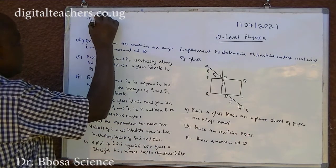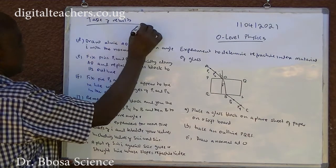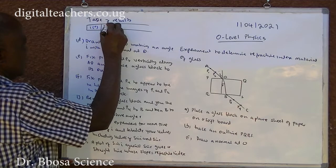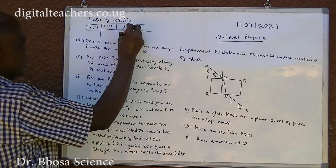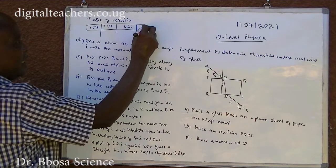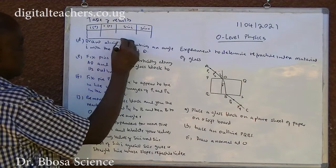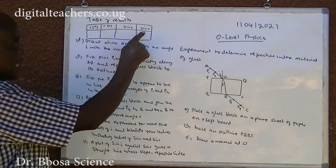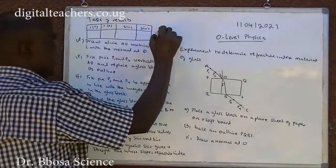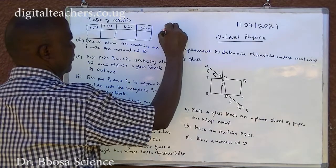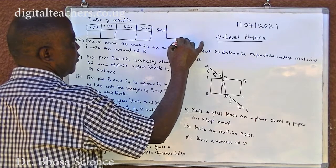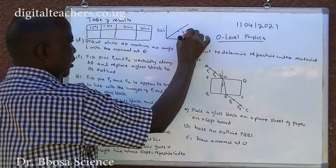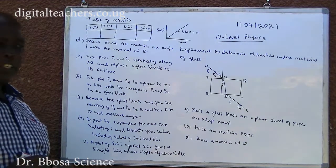Repeat the experiment for more five values of I and tabulate your results. So the table of results is expected to have I in degrees, then R in degrees, then sine I with no units, then sine R with no units. Then when we plot the values of sine I against the values of sine R, we get a straight line. The slope is equal to N, where N is the refractive index of glass.